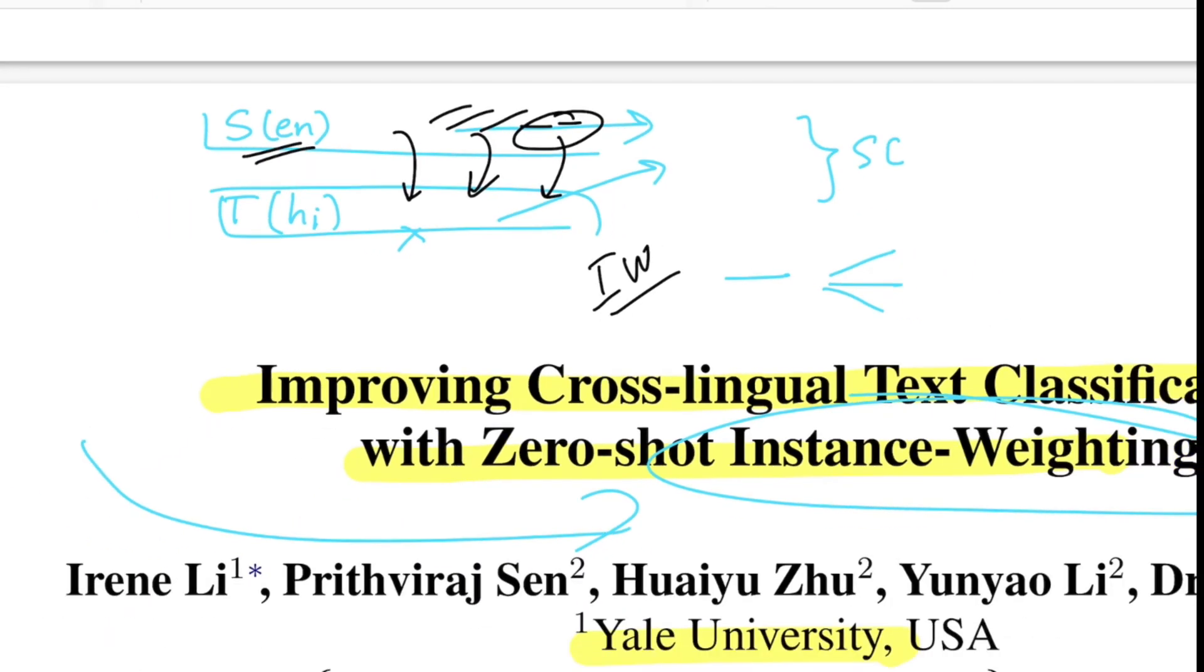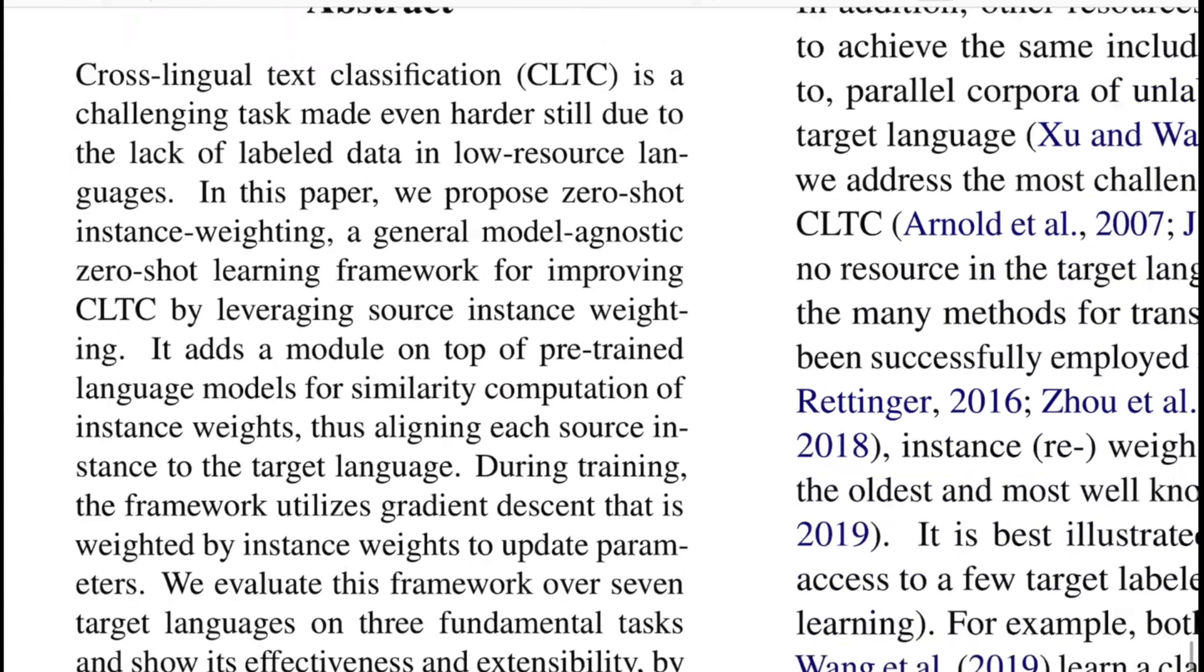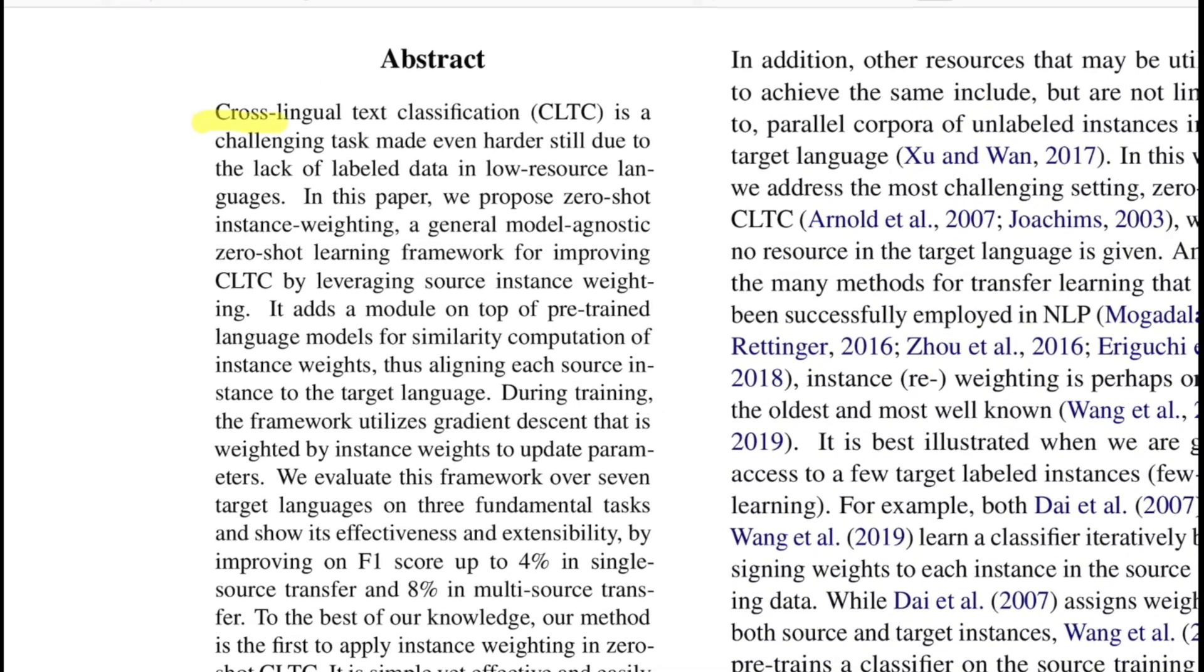That's in crux the entire idea of the paper, and that's what they have written in the abstract: that the cross-lingual text classification (CLTC) is a challenging task made even harder still due to lack of labeled data in the low resource languages. In this paper we propose a zero-shot instance weighting, a general model agnostic zero-shot learning framework for improving the cross-lingual text classification by leveraging the source instance weights.